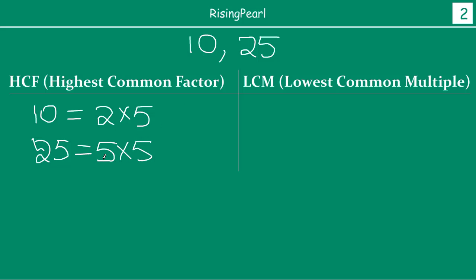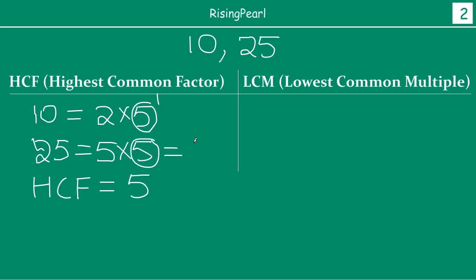HCF means we find the common factor and then pick the smallest power. The common factor between 10 and 25 is 5, because 5 exists in both numbers. The power of 5 in 10 is 1, and the power of 5 in 25 is 2. We pick the smallest power, which is 1. So 5 to the power 1 is 5, meaning the HCF of these two numbers is 5.